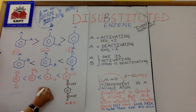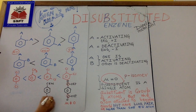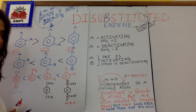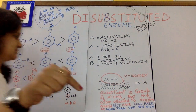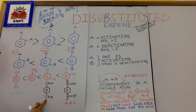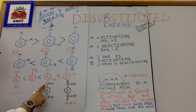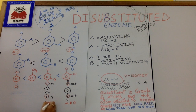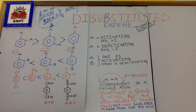Let us consider another example. The substituent here is a group of atoms — not a single atom. The atom attached to benzene is carbon. Is carbon having a lone pair? No. Is it attached to more than one electronegative atom? No — carbon is attached to just one electronegative atom. So its dipole moment is also zero, just like the single-atom group case.